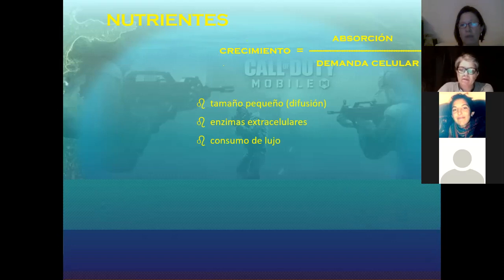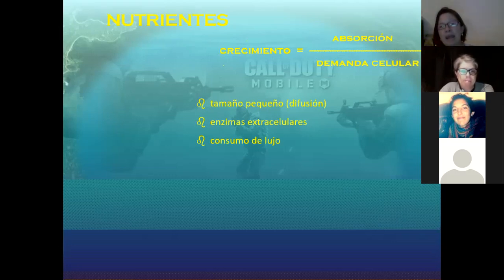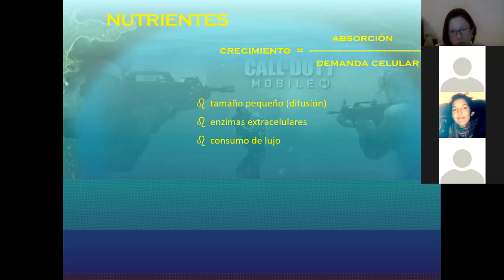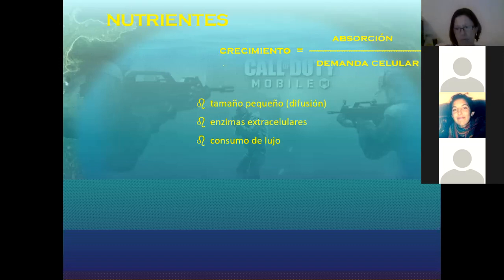Luego tenemos consumo de lujo. ¿Consumo de lujo sobre qué trabaja: sobre la absorción o sobre la demanda? Sobre la demanda. Trabaja sobre la demanda, porque es una manera de engañar al ambiente. La estrategia del consumo de lujo es esconder lo que ya ha absorbido: hacer un paquetito o un cristalito del nutriente dentro de la célula para favorecer el ingreso de más nutriente. Si en algún momento se equilibran las concentraciones, cada vez es más caro metabólicamente meterlo dentro de la célula. Así que es una forma de incentivar la demanda celular.